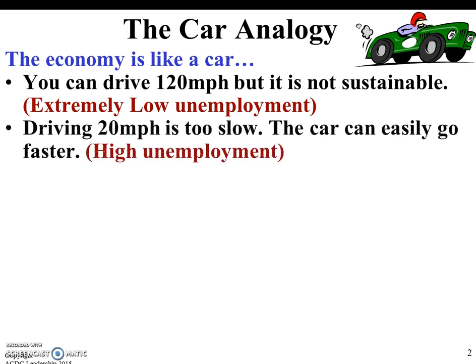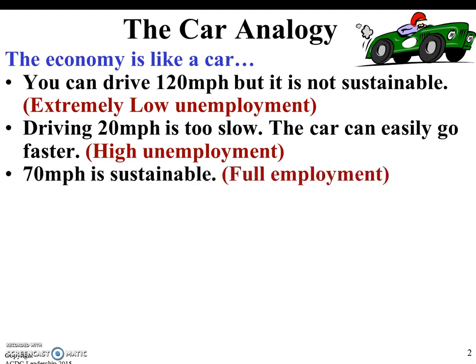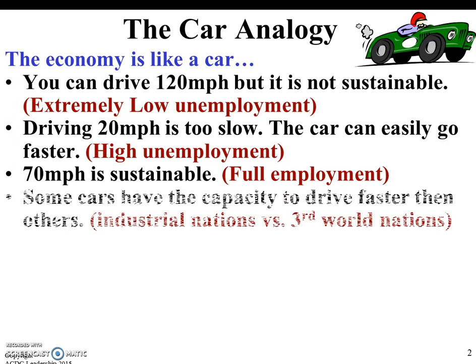Driving 20 miles an hour is too slow — the car can easily go faster. So this would be high unemployment, well above 6 percent. We know the car is capable of going faster; we don't want to be reckless, but we know we can go faster than 20 miles an hour. So we would meet in the middle. 70 miles an hour is sustainable — that would be full employment, somewhere in that 4 to 6 percent range — and that would keep us on a nice, steady pace as we grow the economy.